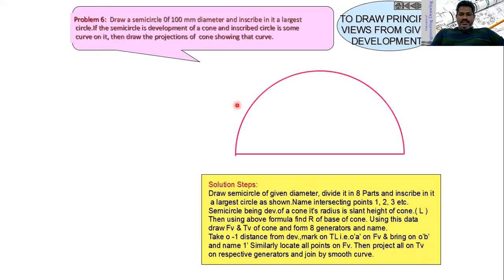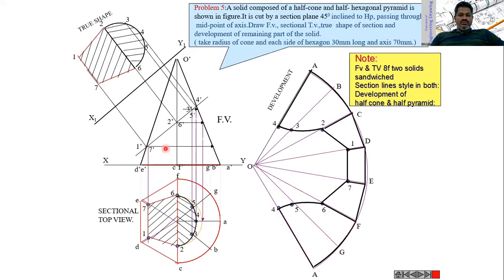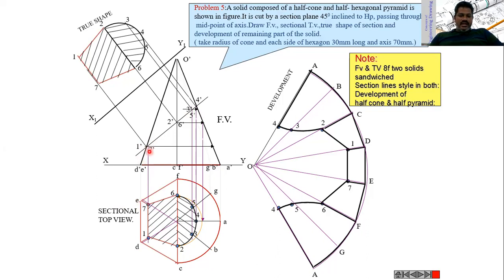After doing the section, indicate all generators: D-dash E-dash, C-dash F-dash, G-dash B-dash, and at EA also. Name the section points 1, 2, 3, 4, 5, 6, 7. Project all these points downward. D and E project down to intersect at points 1 and 7 respectively on the top view.